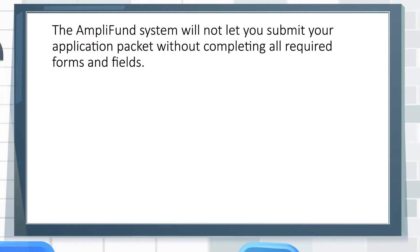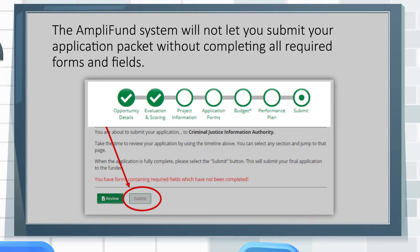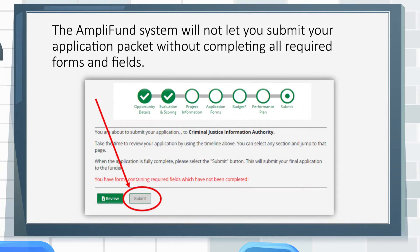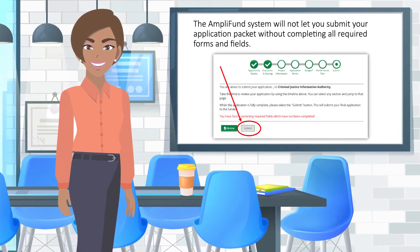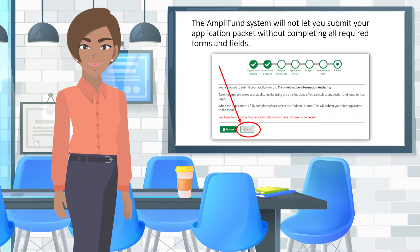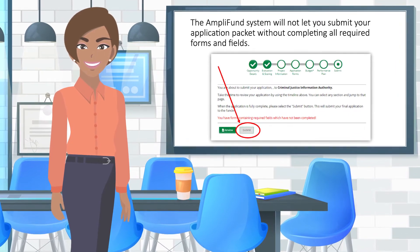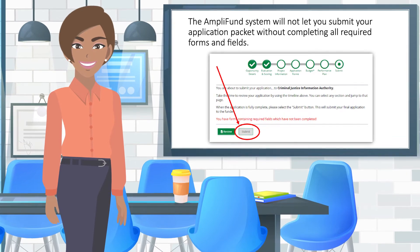The Amplifund system will not let you submit your application packet without completing all required forms and fields. As seen here, there are circles at the top that serve as a checklist. Any sections without a check mark still need to be completed. To save time, you can click directly on the circle and navigate directly to that section.